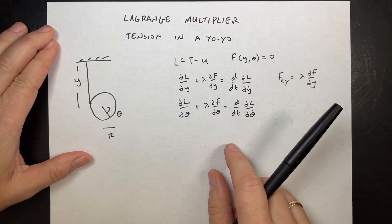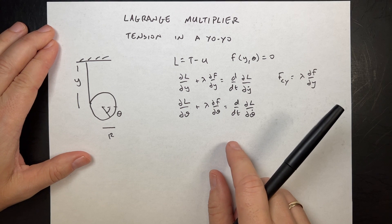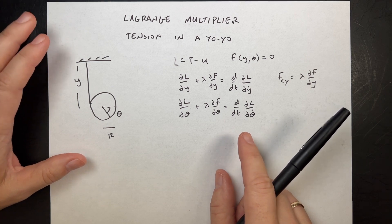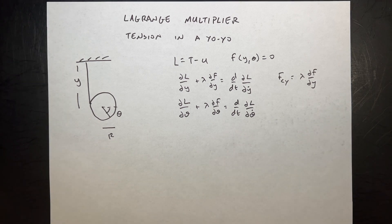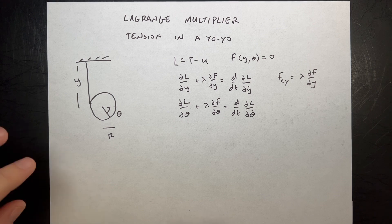Lagrangian mechanics, Lagrangian multipliers. Lagrangian multipliers define the force of constraint. This is a pretty common problem in textbooks, and I'm going to solve it two ways. The idea is to find the tension in the string.